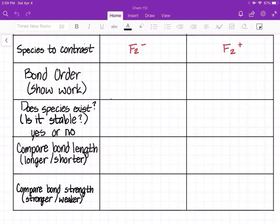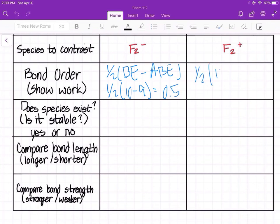Now here's a chart to compare F2 minus and F2 plus. Again, the bond order is one-half bonding electron minus anti-bonding electron, which comes out to be 0.5. And then for F2 plus it would be 1.5.